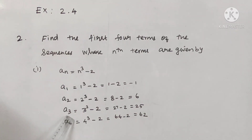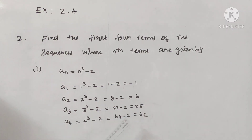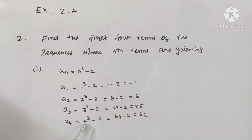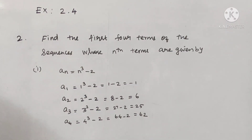Next, a3 is 3 cube minus 2. 3 cube is 27, minus 2 is 25. So a4 is 4 cube minus 2. 4 into 4 is 16, 16 into 4 is 64, so 64 minus 2 is 62. So this is the book answer.